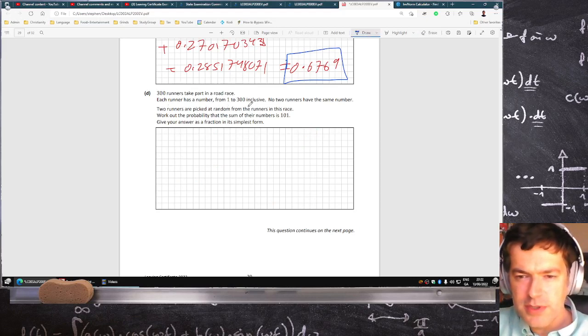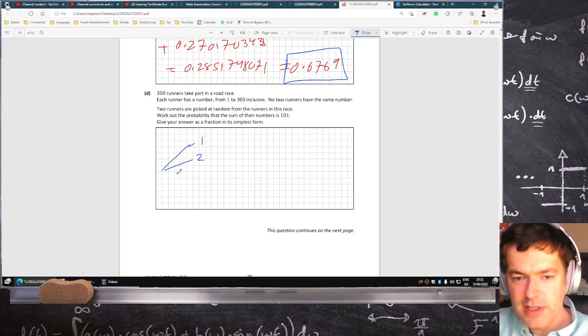So each runner is numbered 1 to 100. Two runners are picked at random from the race, work out the probability that their sum is 101. So you take out one runner, and then they can have a 1 or a 2, etc.